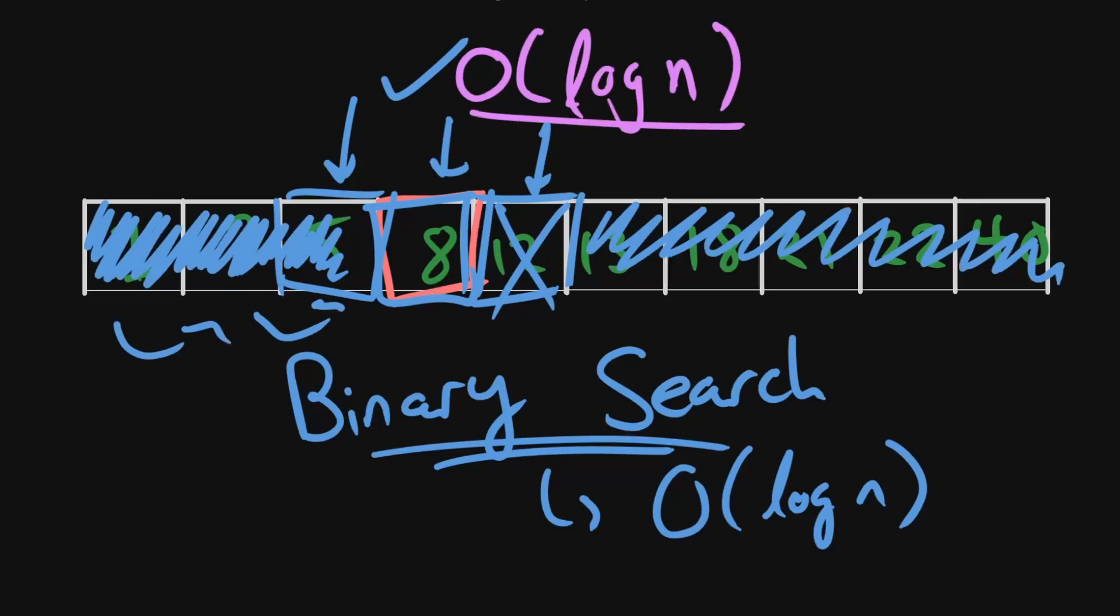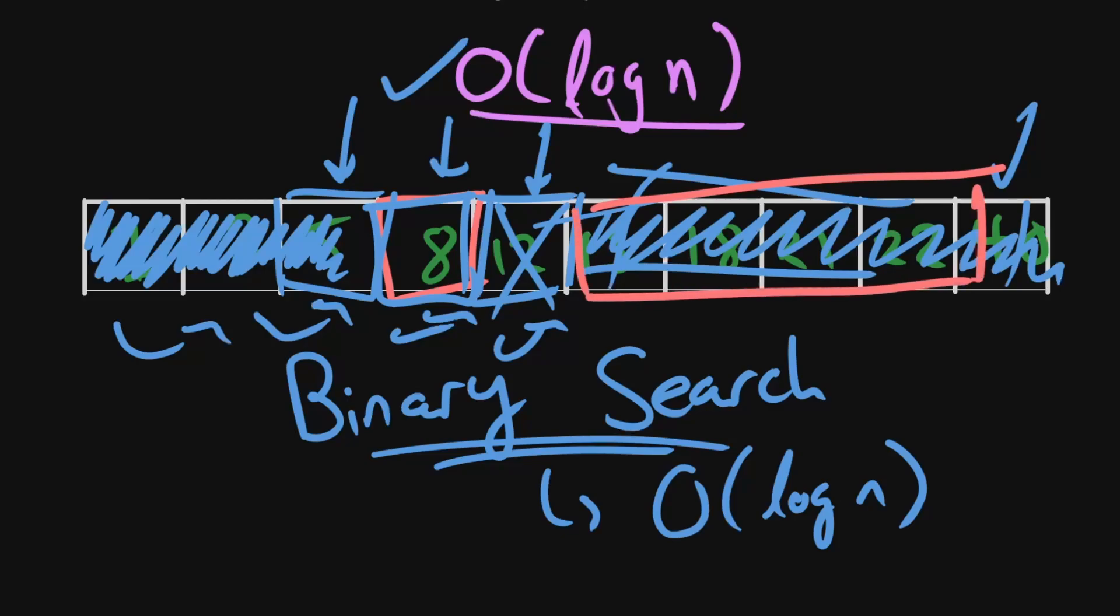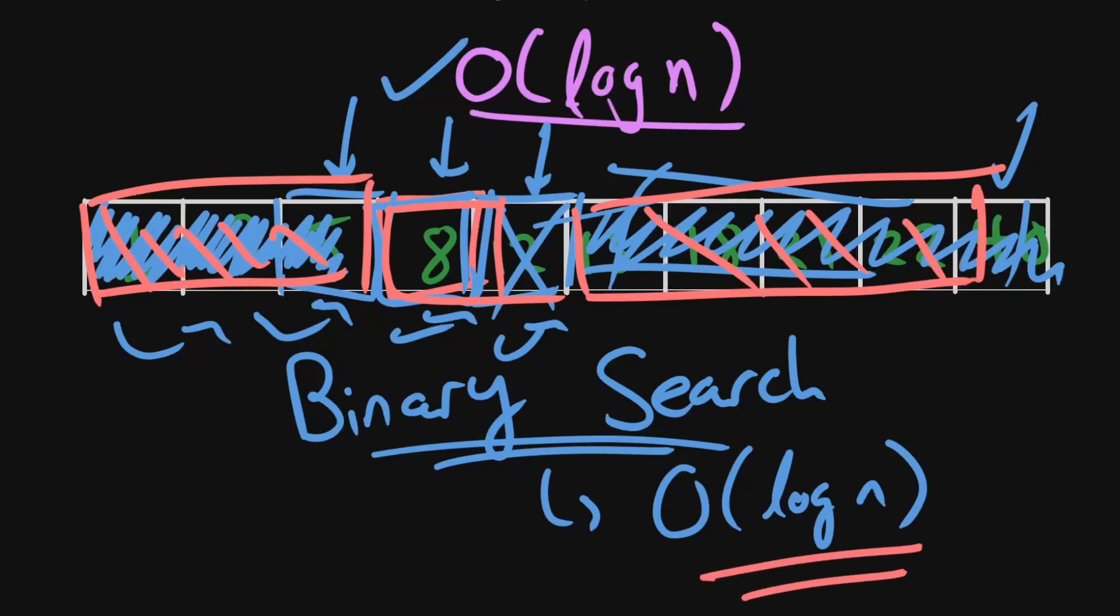So rather than looping through everything and checking for the solution, we did three steps. The first step eliminated half of the array here. The second step eliminated another half of the array. And then we were just left with this small array. But I just wanted to show you an example of an O(log n), because whenever you speak of O(log n), binary search is probably the first thing that comes to most people's mind.